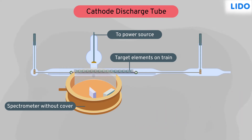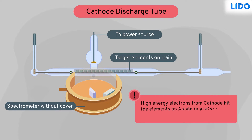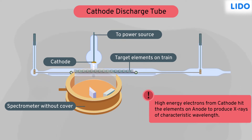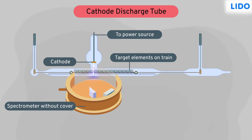On passing an electric current, the high-energy electrons emitted from the cathode hit the elements at the anode to produce X-rays of characteristic wavelength. They were specific for each element, just like human fingerprints. He further passed these X-rays through a prism to disperse them and noted the wavelength of the rays emitted by different elements.